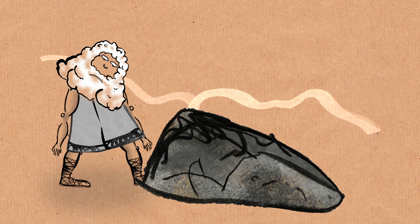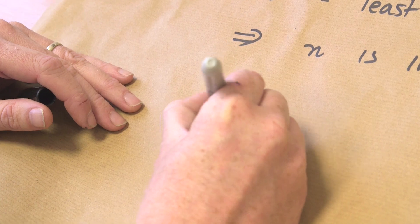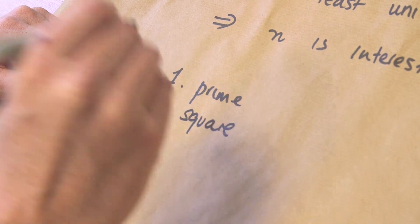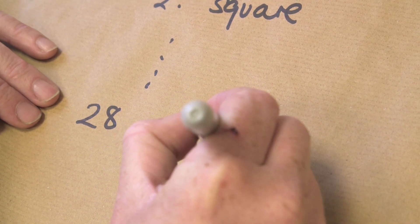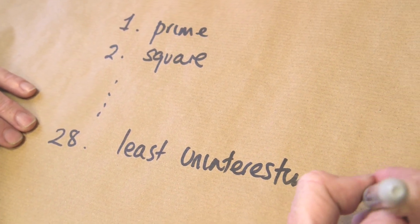What you really need to do is define what you mean by interesting. You could write down a list of criteria — maybe a prime number is interesting, a square number is pretty interesting. And at some point on that list you write down that it's the least uninteresting number as one of the criteria. But that's clearly ill-defined. The problem is that the criteria aren't well-defined; you need to draw the conclusion about a number before the definition is complete. So it's fundamentally flawed as a logical problem.